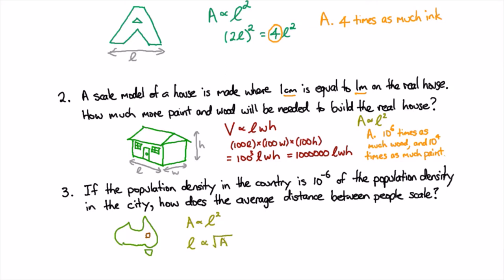So if you take the square root of both sides there'll be some pre-factors in here you have to take the square root of as well but the length will be proportional to the square root of the area times the square root of those pre-factors.